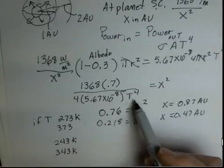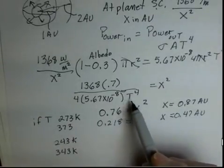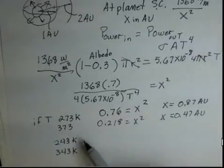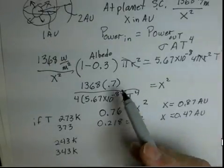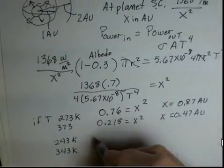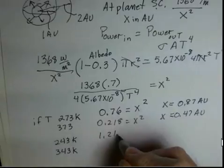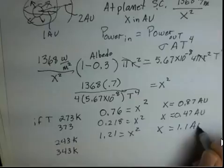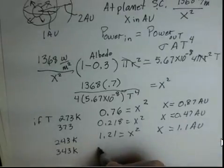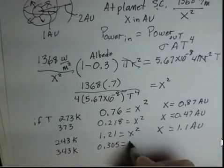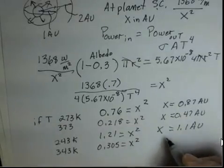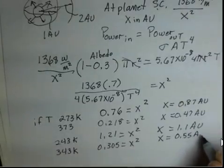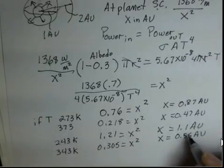Again, using the same equation here, finding the place where the blackbody equilibrium temperature would be 243 Kelvin. I put 243 here and square it twice and complete the calculation. I come up with 1.21 is X squared, or X is 1.1 AU. And the other case, 0.305 is X squared, and X equals 0.55 AU. Now the Earth is inside this range of values.